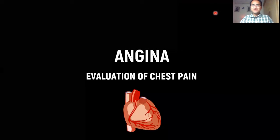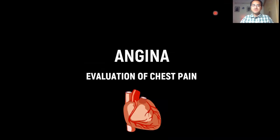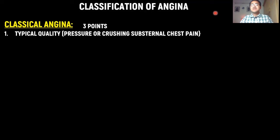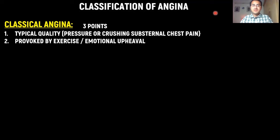Today we are going to talk about angina and evaluation of chest pain. First, we need to classify angina. Classical angina has three points: one, it has typical quality — pressure or crushing substernal chest pain, as if someone has put weights on their chest; pain that radiates toward the jaw and the left arm; it is provoked by exercise and emotional upheaval; and it is relieved by nitroglycerin or rest.